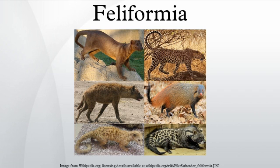Feliformia is a suborder within the order Carnivora consisting of cat-like carnivorans, including cats, hyenas, mongooses, civets, and related taxa. Feliformia stands in contrast to the other suborder of Carnivora, Caniformia.